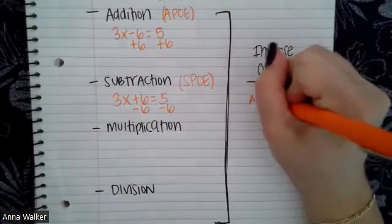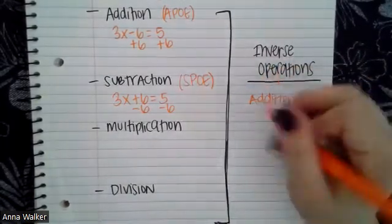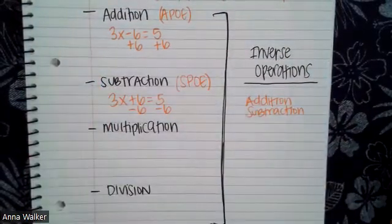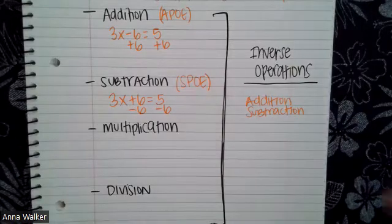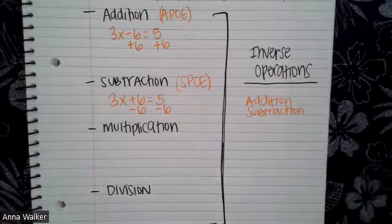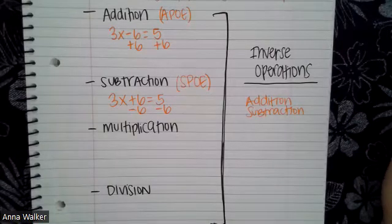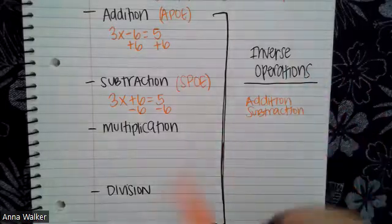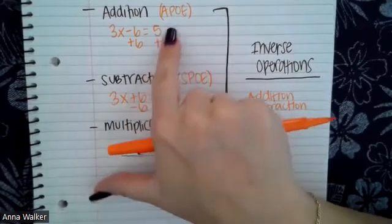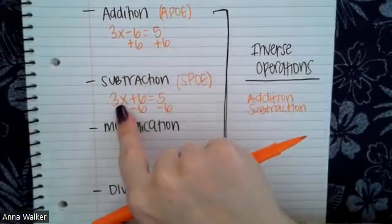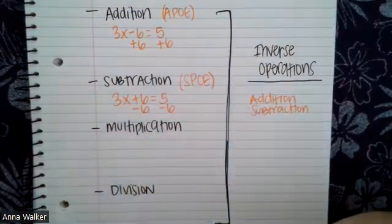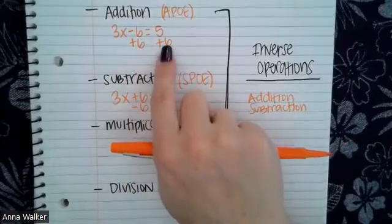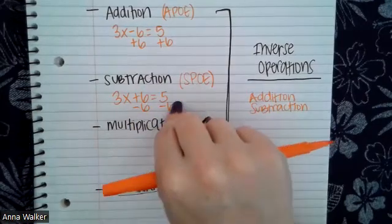That is because addition and subtraction are inverse operations to each other — they're the opposite operations. If you're trying to figure out what plus something makes something else, you can subtract to find the missing number. Same thing with subtracting: if you're trying to figure out what minus something equals something else, you can use addition to solve. So when we work to solve for our variables, we can use the addition and subtraction properties of equality to isolate our variable. If we're subtracting in the equation, we use the addition property of equality. If we're adding, we use the subtraction property.